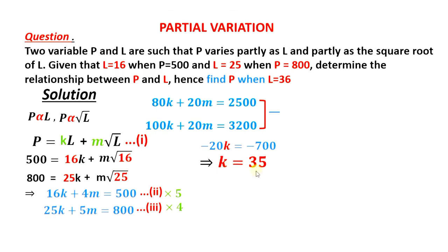So if K is 35, we can substitute this in equation 2, so that we have 16K, and K is 35, plus 4M is 500.